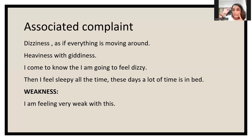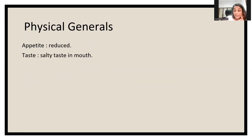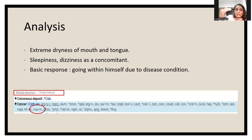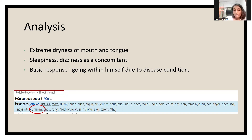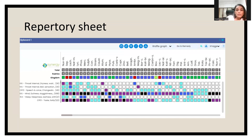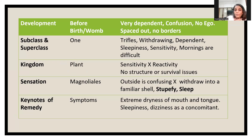He sometimes had dizziness and heaviness, a lot of weakness, difficulty getting out of bed, and a salty taste in the mouth. So if we see extreme dryness of mouth and tongue, sleepiness, and dizziness as a concomitant — and the basic response being to withdraw — you can think of Nux Moschata. Interestingly, in the internal throat cancer rubric also there are not many remedies listed, and you will find Nux Moschata there. With changeable hoarse voice, salty taste, sleepiness, dryness, and ball sensation in the throat — Nux Moschata comes very beautifully and he did really really well.